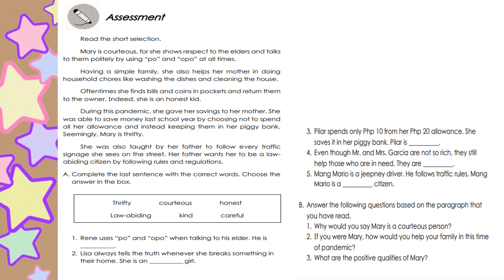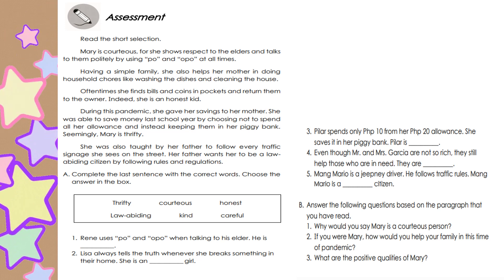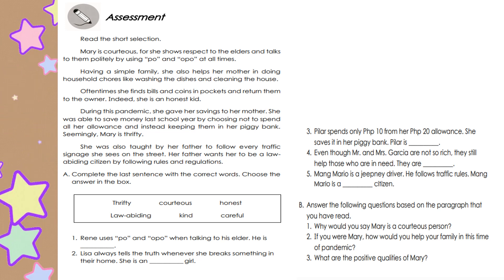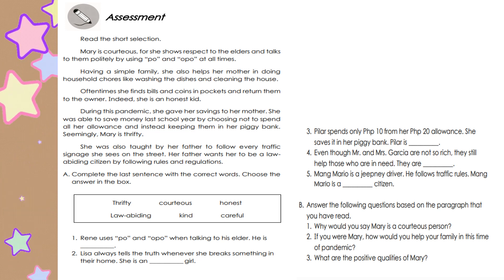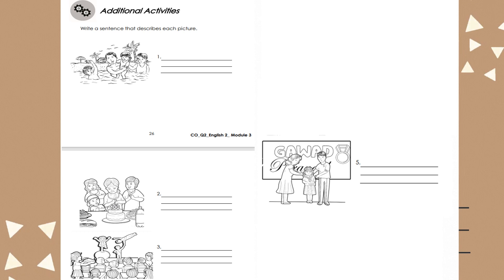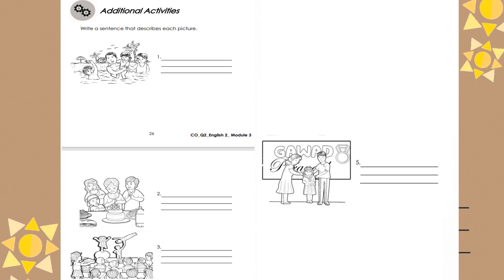For letter B, answer the following questions based on the paragraph that you have read. 1. Why would you say Mary is a courteous person? 2. If you were Mary, how would you help your family in this time of pandemic? 3. What are the positive qualities of Mary? For additional activities, write a sentence that describes each picture. Look at the following pictures, tell something about it, and write a sentence for it.